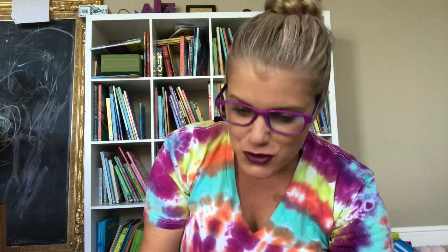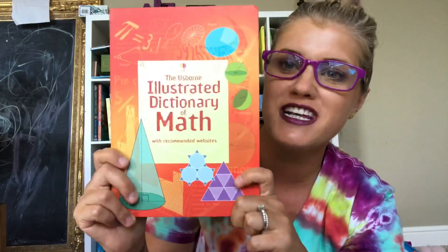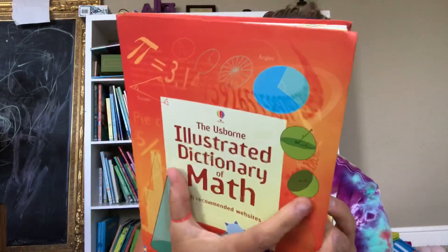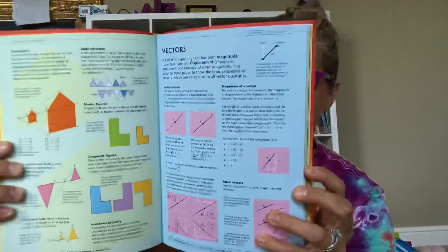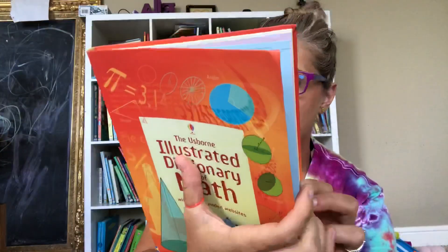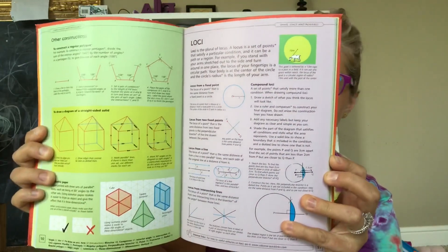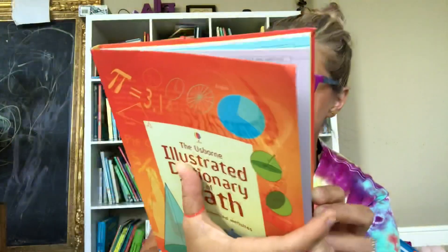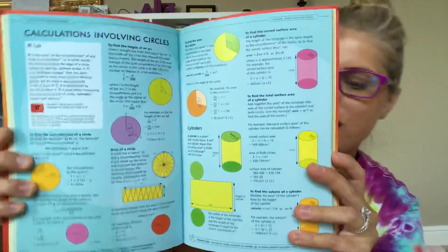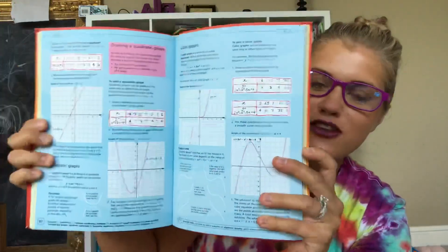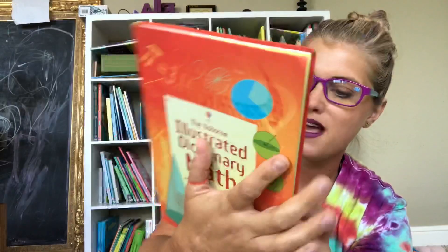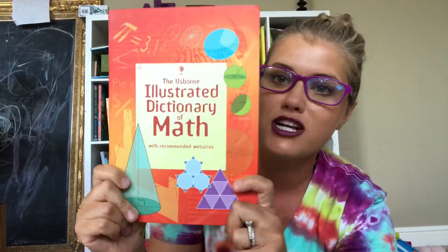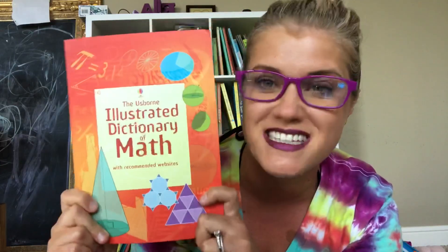A step above the elementary one, we have the Illustrated Dictionary of Math. There are over 500 definitions of all the key terms and concepts, more than 300 useful illustrations and diagrams, and over 100 worked examples. There is comprehensive cross-referencing and a detailed index so you can find exactly what you're looking for. Just like the other encyclopedias, this one is internet-linked to recommended websites. There are also amazing titles in this series for biology, chemistry, and physics.